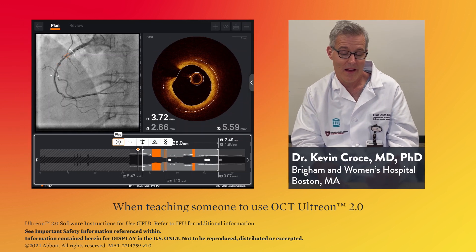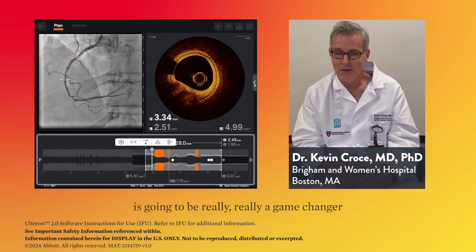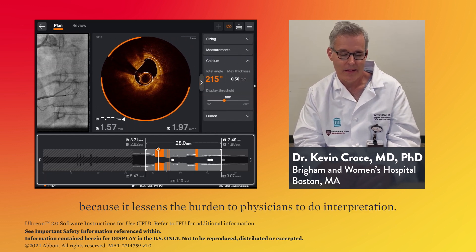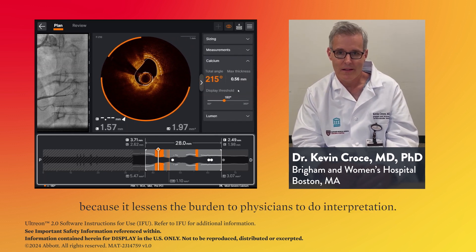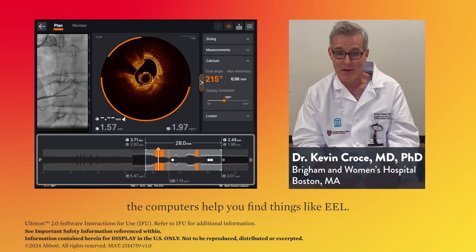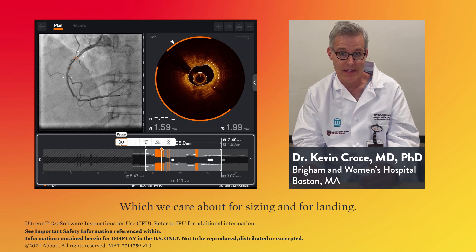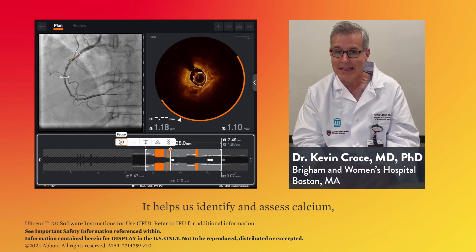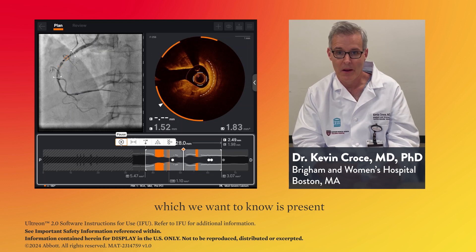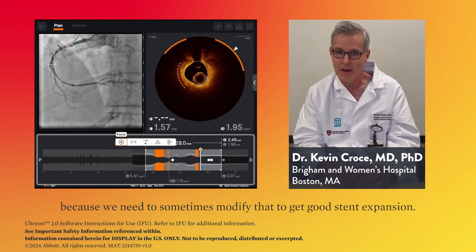When teaching someone to use OCT, Ultran 2.0 is going to be a real game changer because it lessens the burden on physicians for interpretation. If you're new at image interpretation, the computer helps you find things like EEL, which we care about for sizing and landing. It also helps us identify and assess calcium, which we need to know is present because we sometimes need to modify that to get good stent expansion.